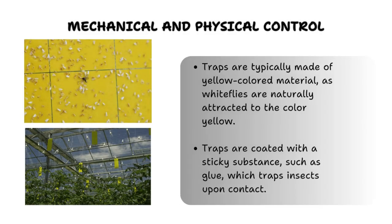A brief overview of how yellow sticky traps work: these traps utilize the color yellow, which is highly attractive to whiteflies, mimicking the appearance of host plant foliage. When whiteflies are drawn to the traps, they become stuck on the adhesive surface, preventing them from feeding and laying eggs on nearby plants. Regular monitoring using yellow sticky traps helps gauge whitefly population levels and aids in making informed pest management decisions.